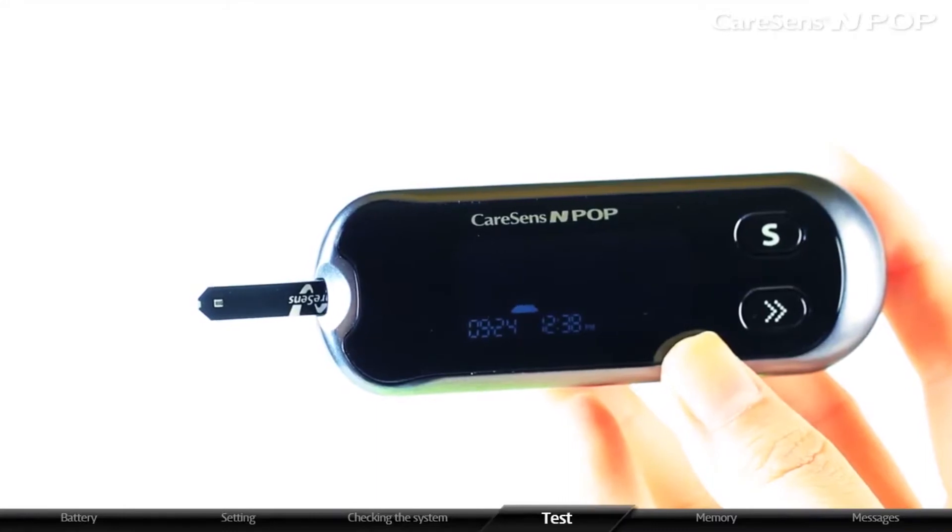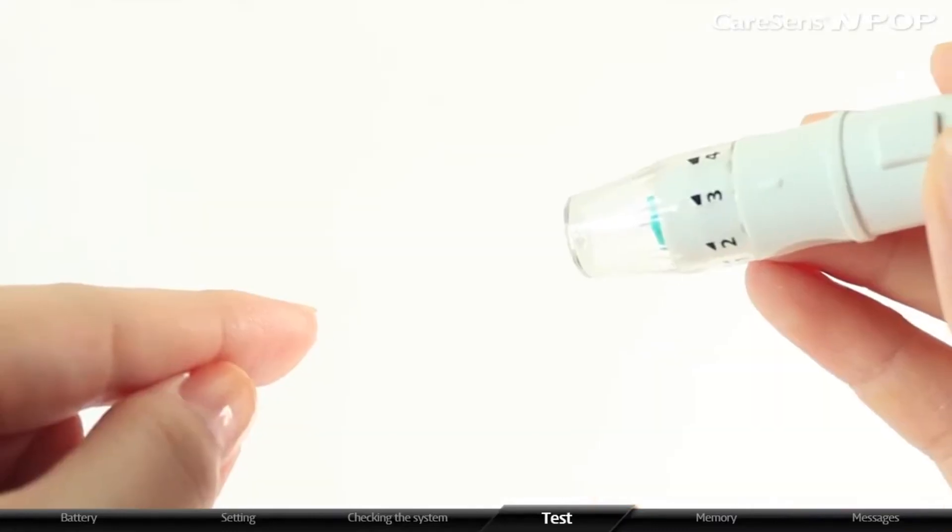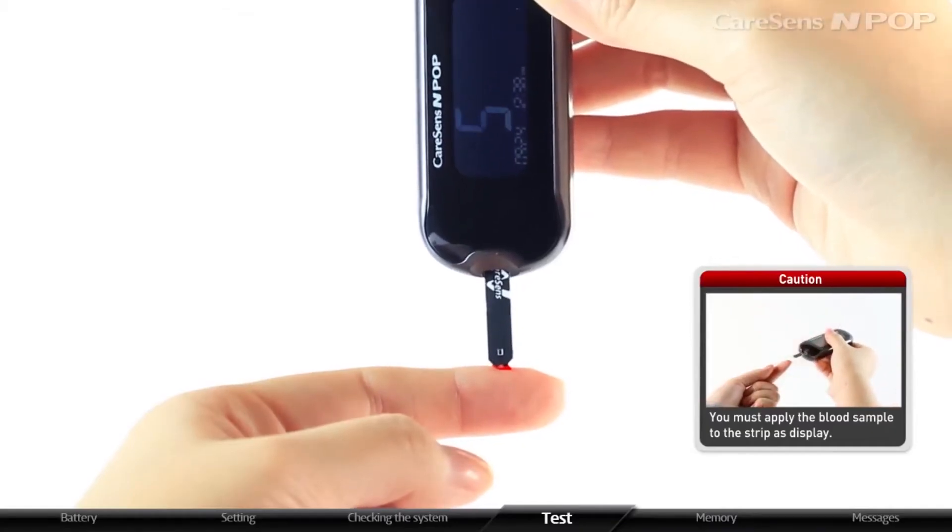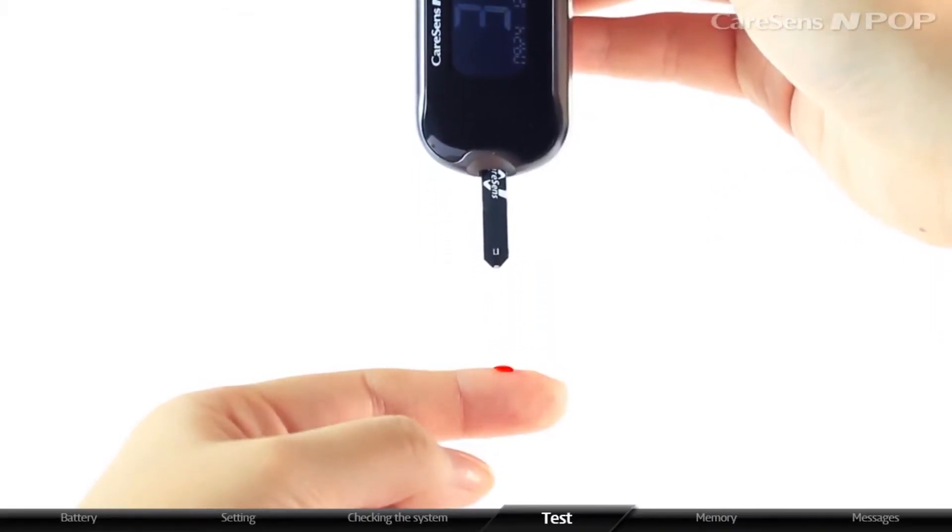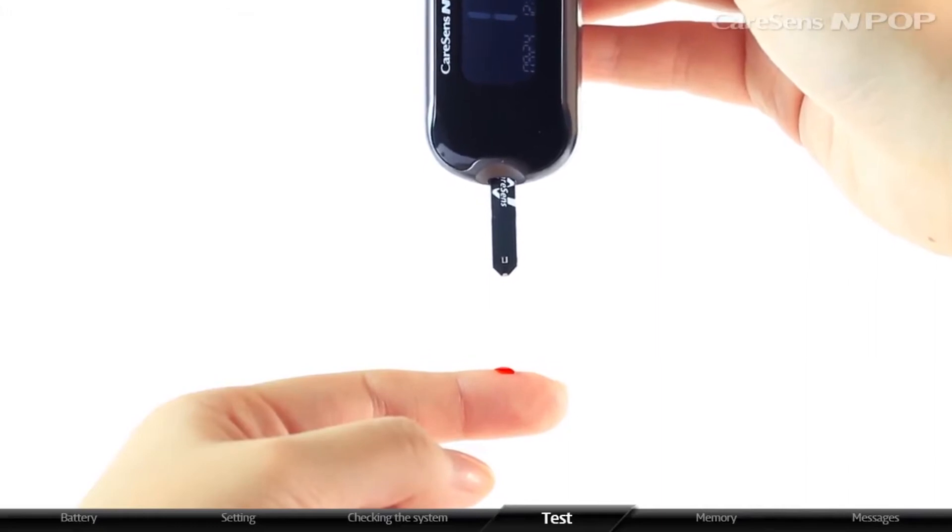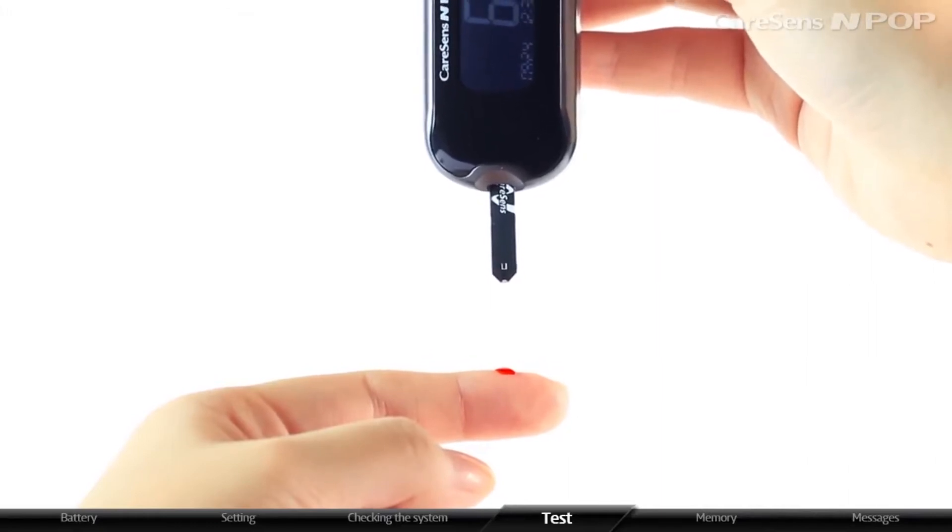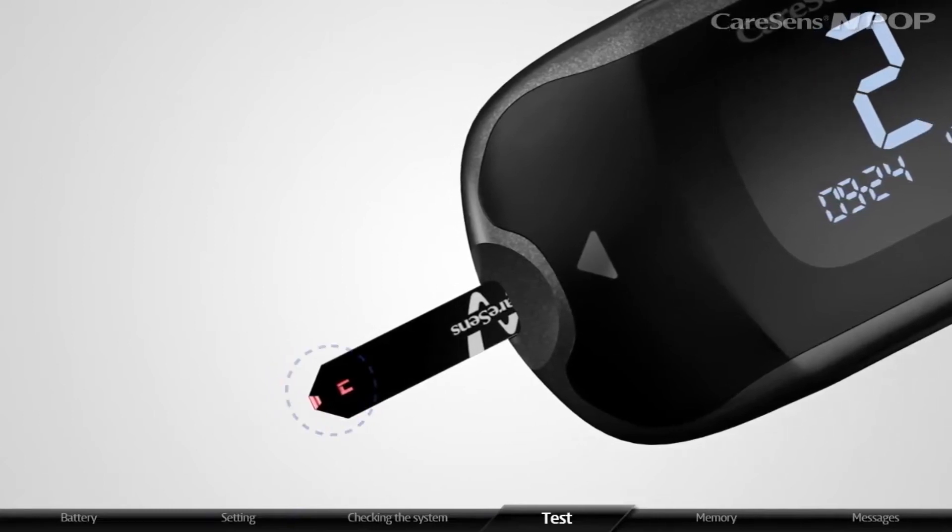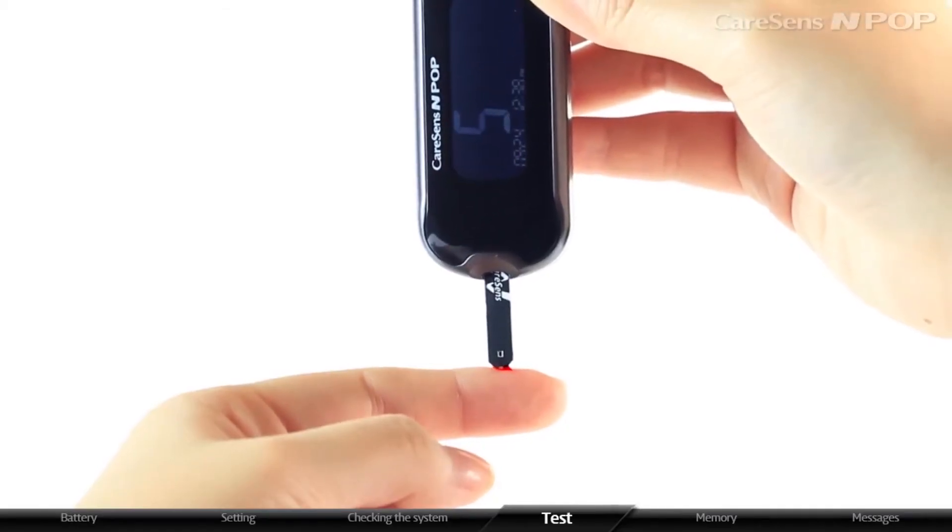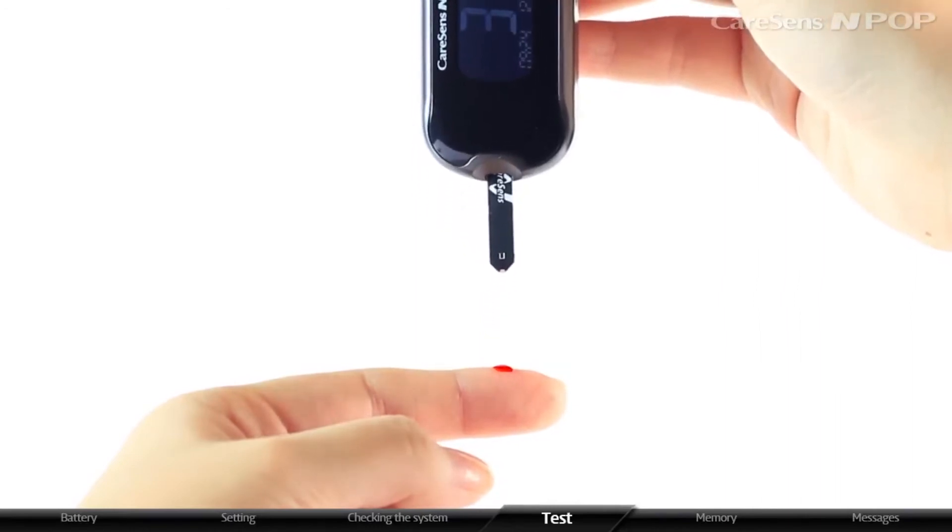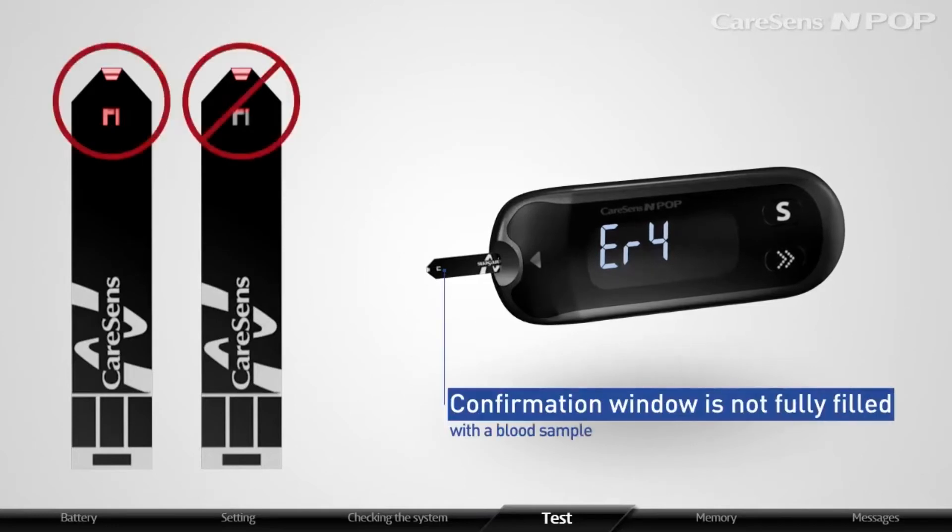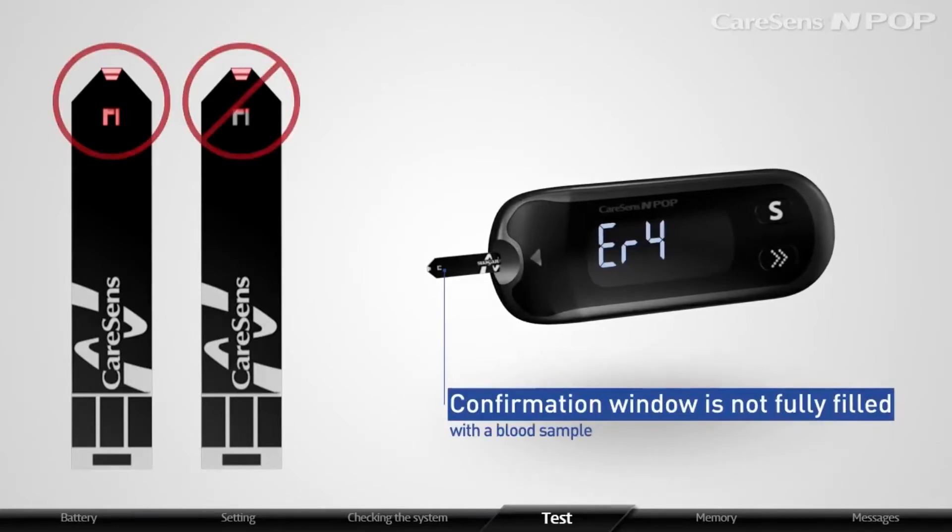When the meter is ready, collect a blood sample with the prepared lancing device by pressing the release button. While the meter displays the blood insertion symbol, let the tip of the strip touch the blood sample until the meter beeps. Confirm if the confirmation window of the strip is filled with the blood sample. At least 0.5 microliters of blood sample is required to fully fill the confirmation window. If the confirmation window is not fully filled with a blood sample, the meter may display error 4.